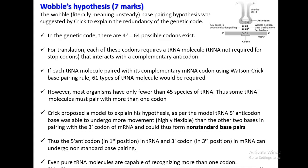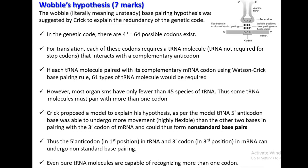That is, we have excluded the three stop codons, which generally do not require a tRNA molecule. However, in nature, most organisms are found to have only 45 species of tRNA or fewer. Now the question arises: how do only 45 species of tRNA carry out the entire process of protein synthesis? The reason is simple — some tRNA molecules must be pairing with more than one codon. There comes the role of the Wobble hypothesis.